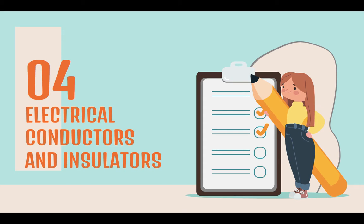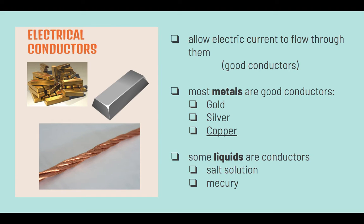Moving on to electrical conductors and insulators. Electrical conductors allow electric currents to flow through them. Most metals are good conductors like gold, silver, and copper. Silver is generally a better conductor than copper, but copper is usually used in current-carrying wires as it is cheaper. Some liquids like salt solution and mercury are conductors too.